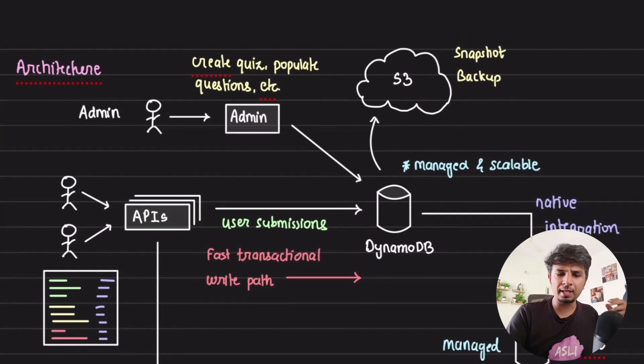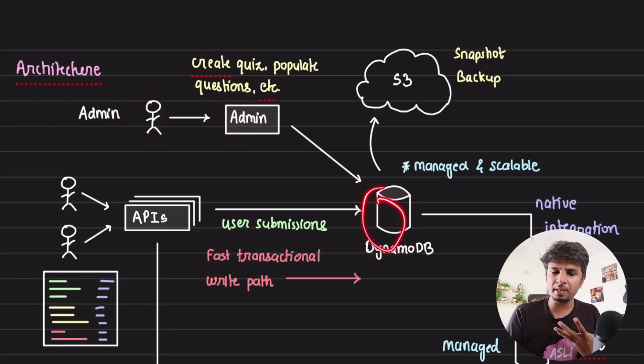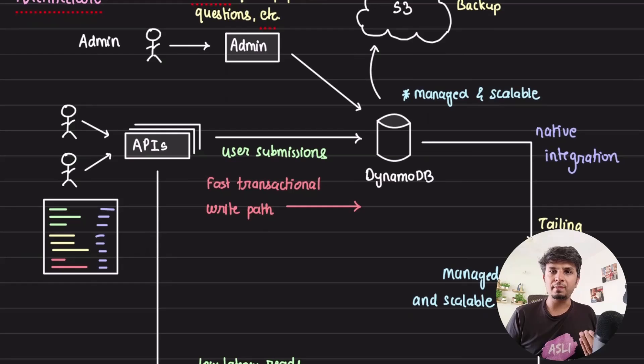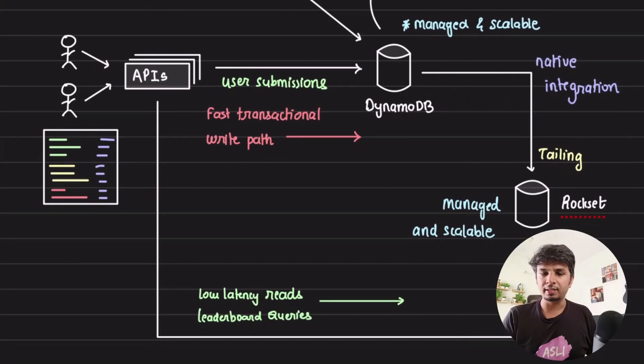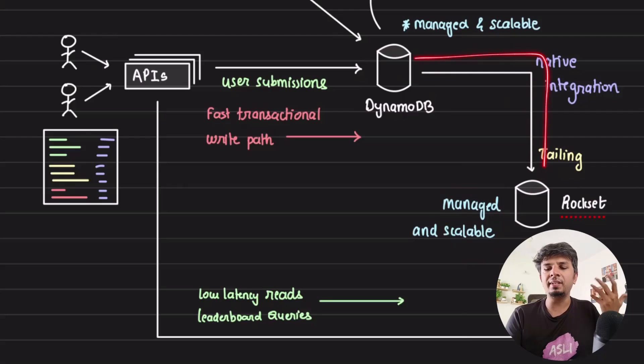The architecture looks something like this: it's dead simple. You have your typical admin interface which creates the tournaments and quizzes in DynamoDB. You have bunch of APIs for user submissions which go and store in your transactional system. From DynamoDB, you can just create a simple integration on Rockset, and the data gets continuously ingested in Rockset. Rockset being managed and scalable, you don't have to do much. There's a native integration—Rockset keeps on tailing the DynamoDB to pick the changes and keeps ingesting and making it available for query.